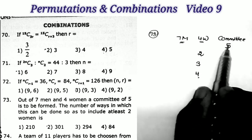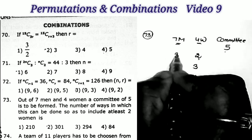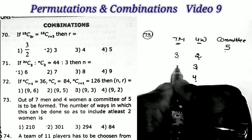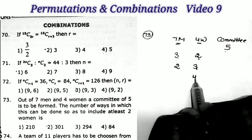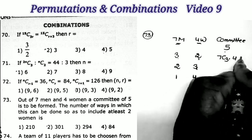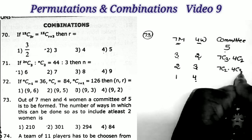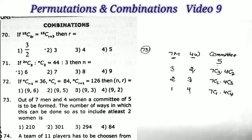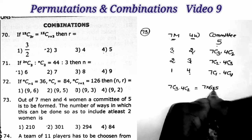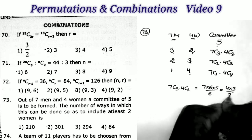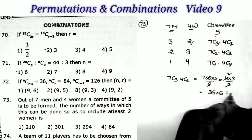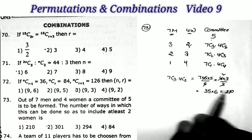We need 5 members total. If 2 women are selected, the remaining 3 come from the men. If 3 women are selected, the remaining 2 come from the men. If 4 women, the remaining 1 from the men. The combinations are: 7C3×4C2, 7C2×4C3, and 7C1×4C4. First: 7C3×4C2 = 35×6 = 210. Second: 7C2×4C3 = 21×4 = 84. Third: 7C1×4C4 = 7×1 = 7.